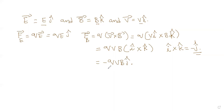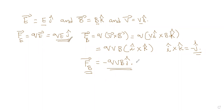Now we have a very fundamental observation. The magnetic force and the electric force are opposite to each other. The electric force is in the plus j-cap direction, and the magnetic force is in the minus j-cap direction. Let's draw that as a figure.